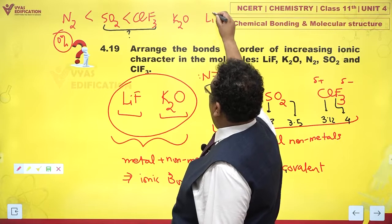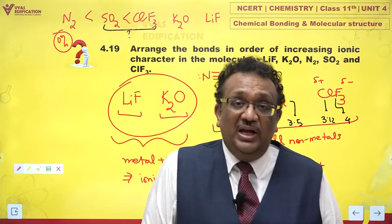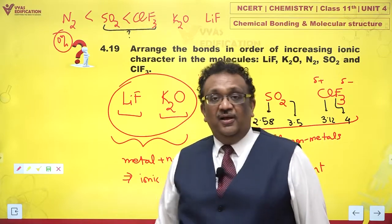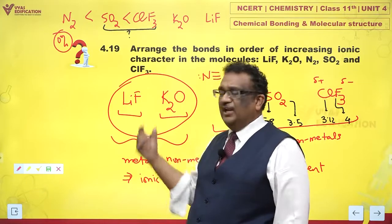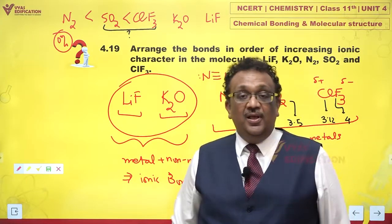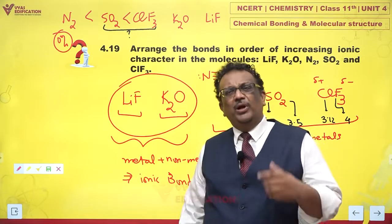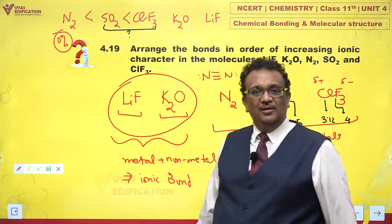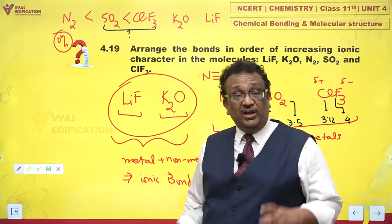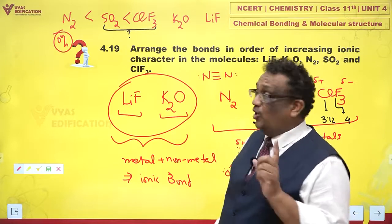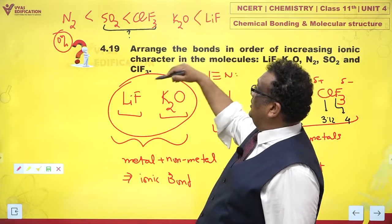The logic offered is that the difference in electronegativity between lithium and fluorine — fluorine has electronegativity of 4 and lithium is around 0.98, so the difference is around 3. For K₂O, oxygen is 3.5 and potassium is around 0.8, so the difference is not as much. Since the electronegativity difference of potassium and oxygen is not as much, K₂O is less ionic, and since the difference is more in LiF, it is more ionic.